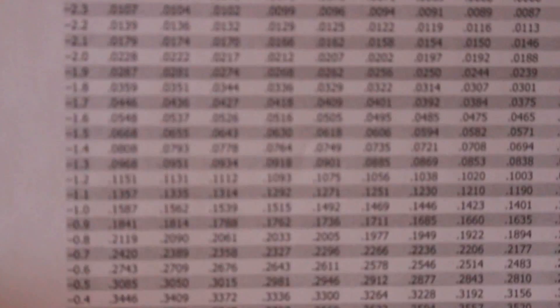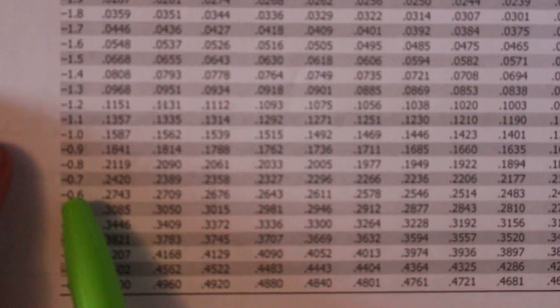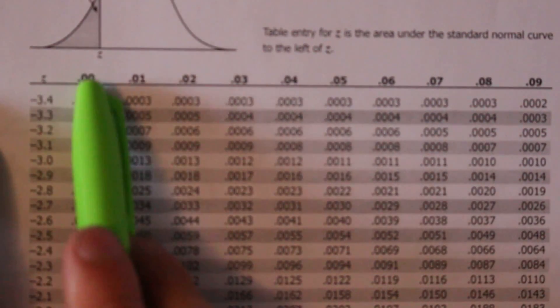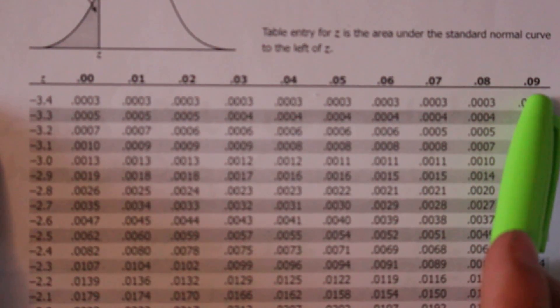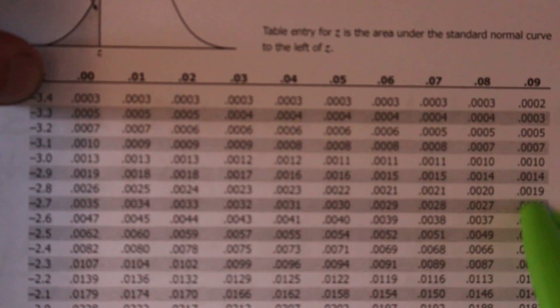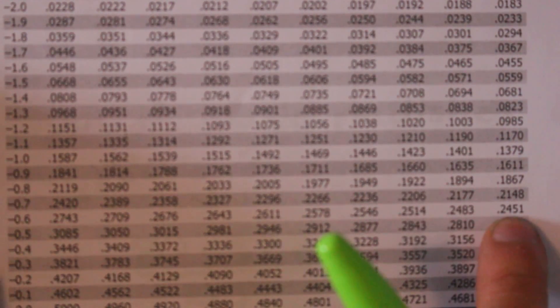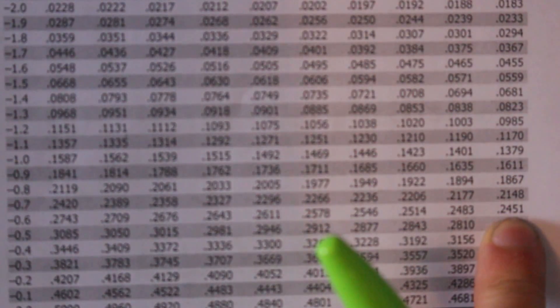Let's see if I can get the zoom to work right on this. I'm looking for negative 0.69. So here's my negative 0.6 portion, and the headings on each column give you the second decimal place. I have 0.69, so I want this column. So I'm going to follow that column all the way down to negative 0.69. That's 0.2451.